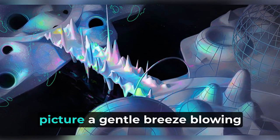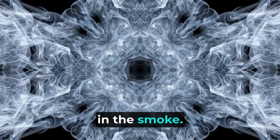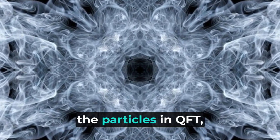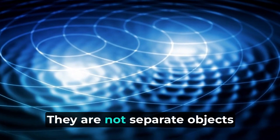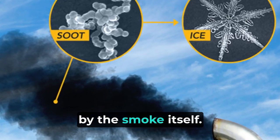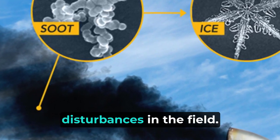Now, picture a gentle breeze blowing through the room, creating swirls and patterns in the smoke. These patterns are like the particles in QFT, including protons. They are not separate objects within the smoke but are formed by the smoke itself. The patterns are excitations or disturbances in the field.